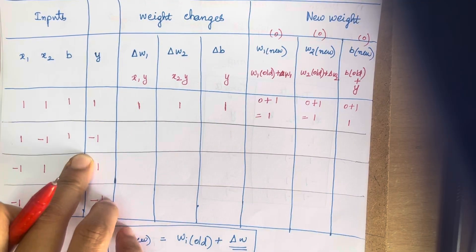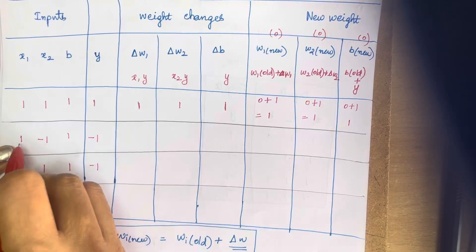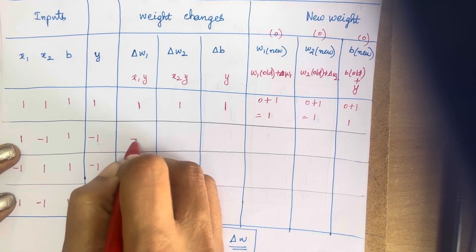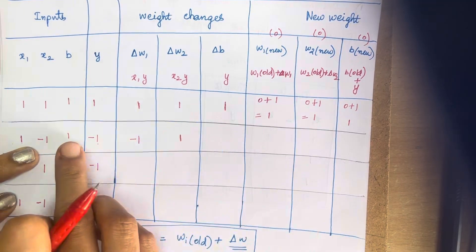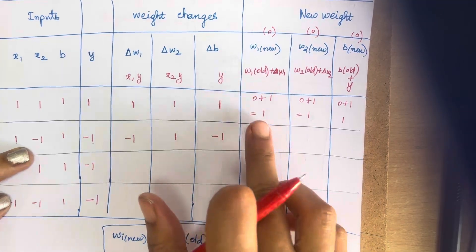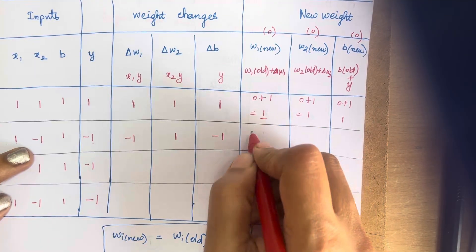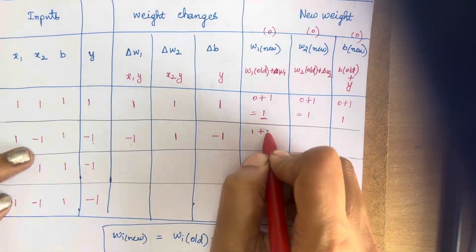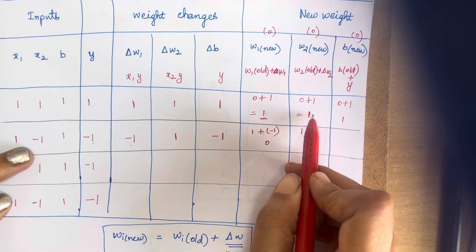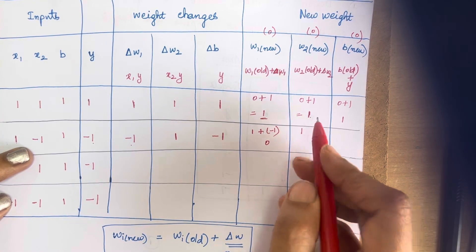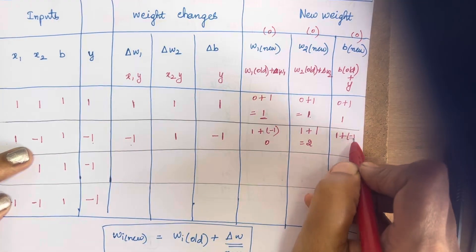For the second input-output pair (1, -1, target=-1): delta_W1 = 1*(-1) = -1, delta_W2 = (-1)*(-1) = 1, delta_B = -1. Using the previous updated weights W1=1, W2=1, B=1: W1_new = 1 + (-1) = 0, W2_new = 1 + 1 = 2, B_new = 1 + (-1) = 0.